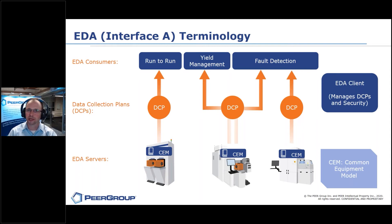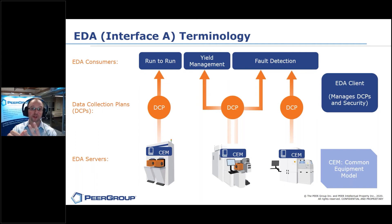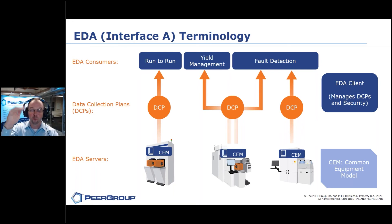For example, the data collection plan could specify the load lock data I want to collect. It's going to start when a wafer enters the load lock and stop when the wafer is done pumping down. During that time, I want my roughing pump speed, my valve status, my pressure gauges, and so on. So the data collection plan specifies all of the variables, when I want to collect them, and how fast I want to collect them.